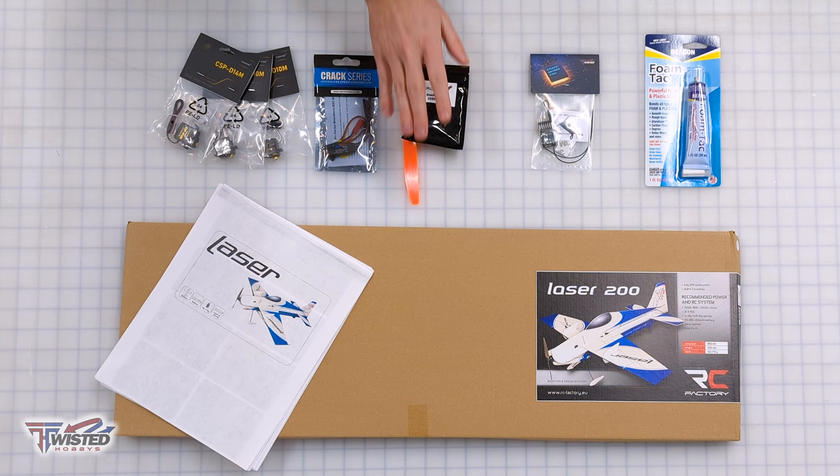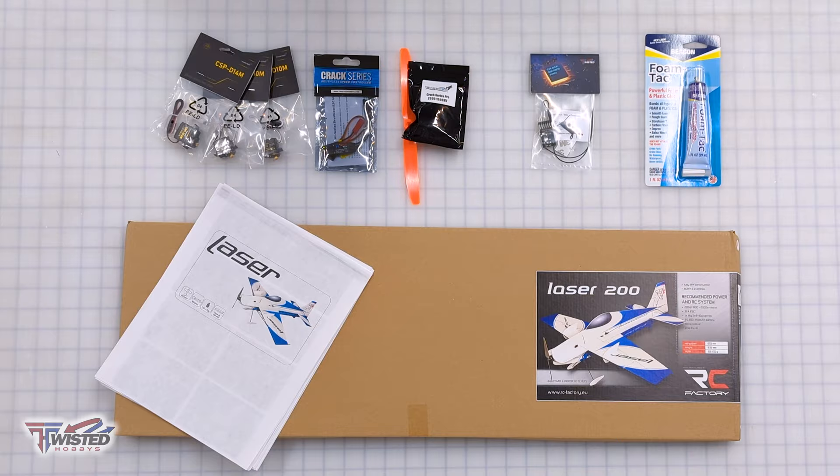The power combo comes with the servos, the ESC, and the profan motor. The receiver is separate.